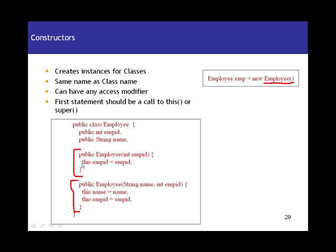These are two constructors we have in the employee class. This looks very similar to general methods in your class — a method would also look the same way. So what's the difference between a method and a constructor? Every constructor should have the same name as the class name. If the class name is employee, my constructor should be employee. Any other name means it's a method. Also, methods can have a return type, but constructors cannot. You can have any access modifier — public, private, protected, or default.